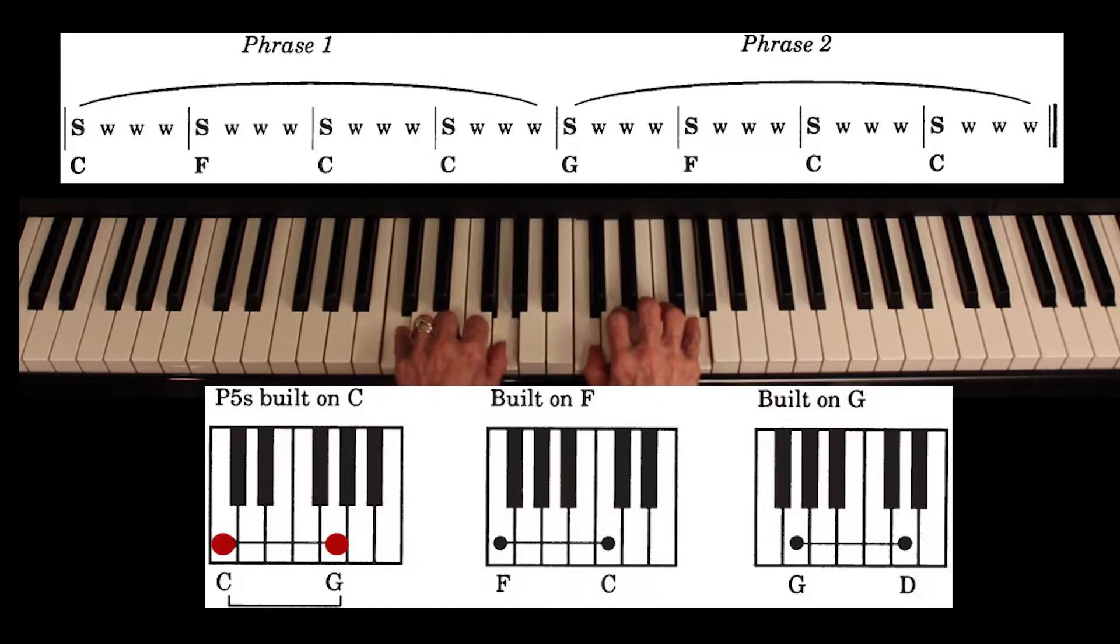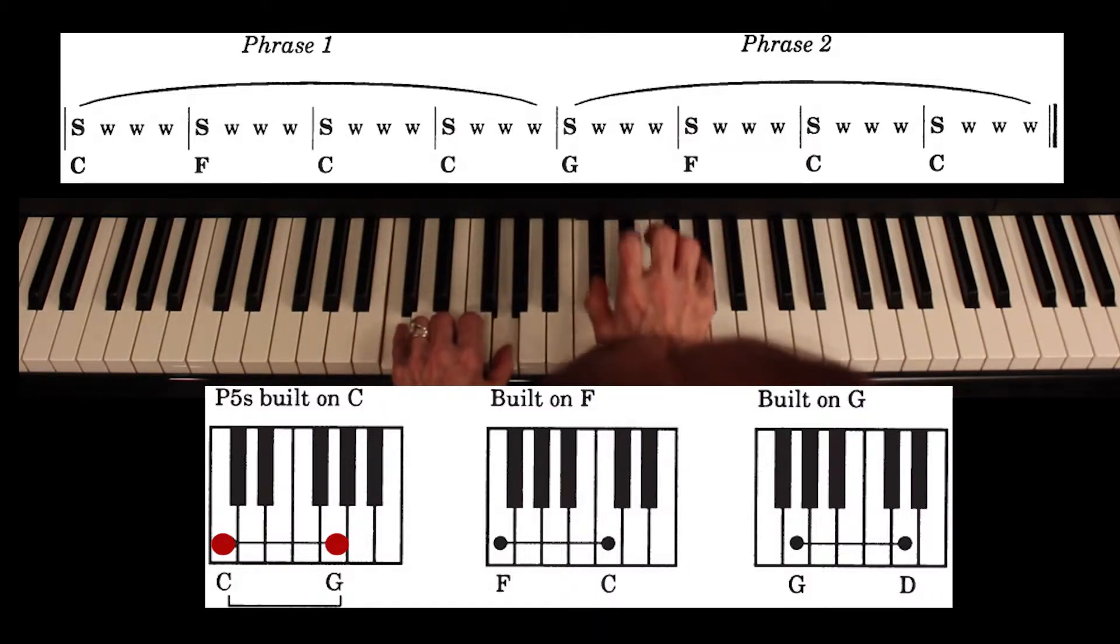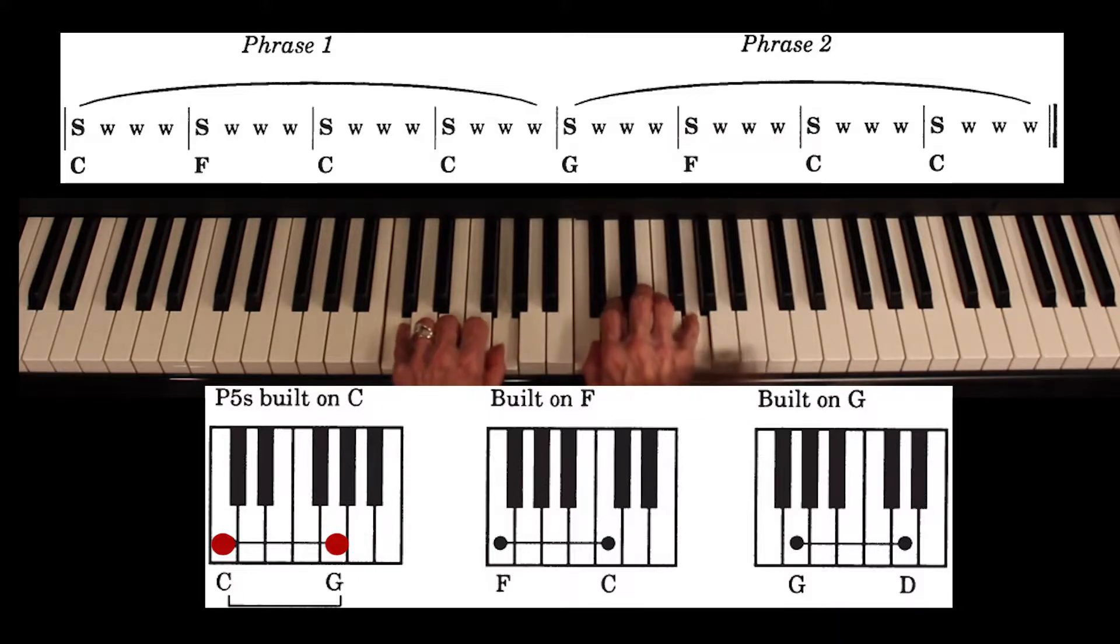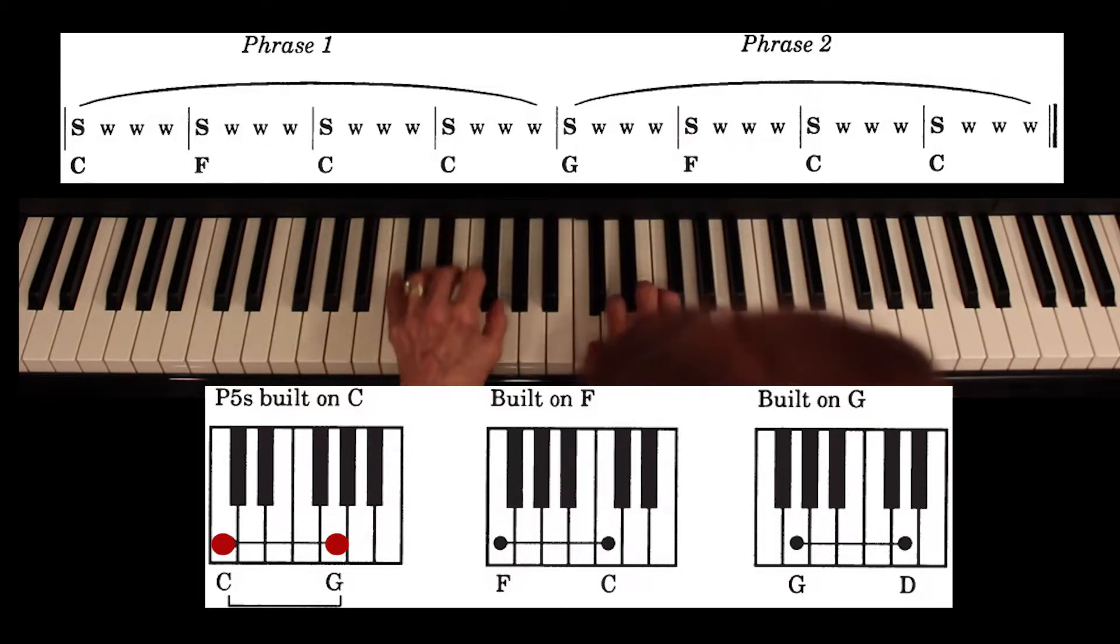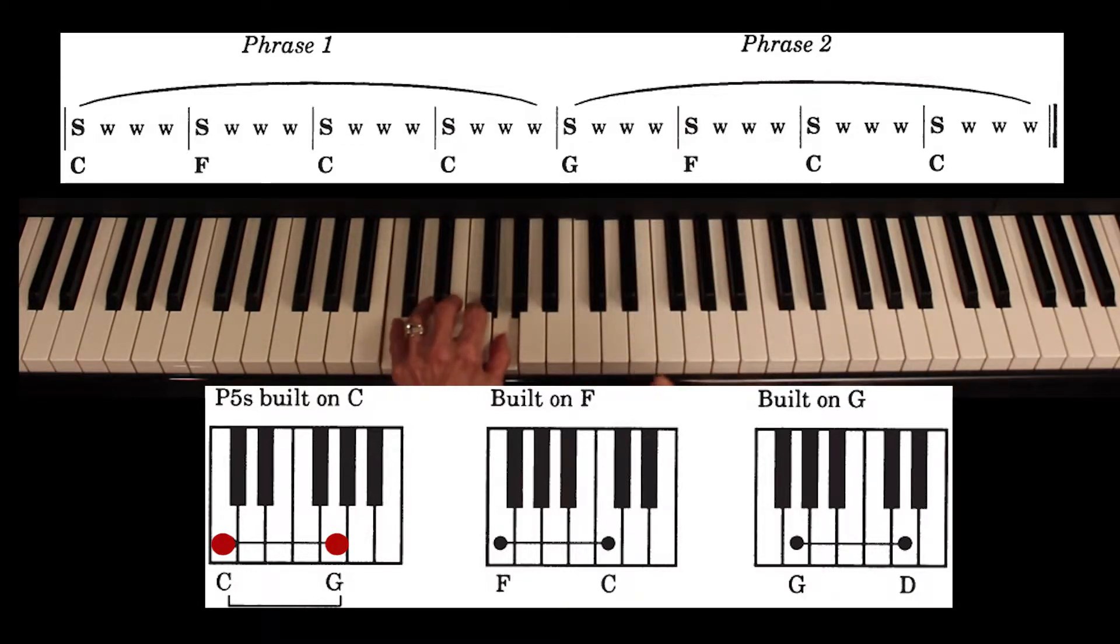Now we don't have to master right now playing them together. We can do what we call echo playing. It is a super learning study technique that we use forever. It's called echo playing, one hand at a time. I would like for you to use the left hand first just to get the brain working that left hand. So play perfect fifth, built on C. When we say built on, we're referring to the lowest pitch of the interval. In this case C. It's called the root of the interval.